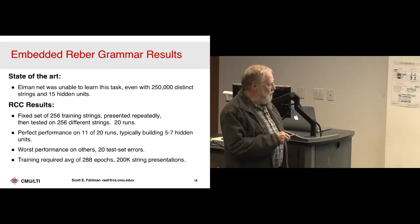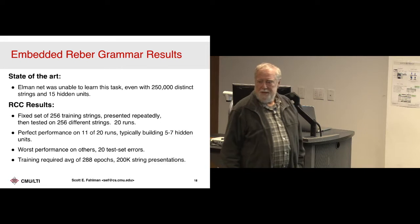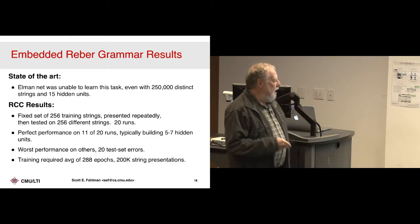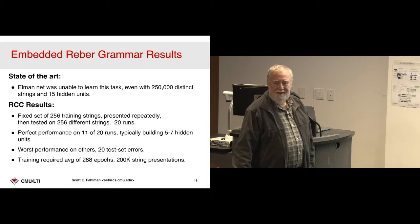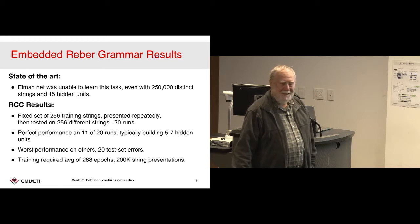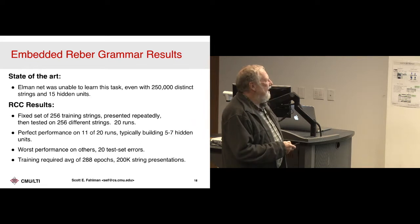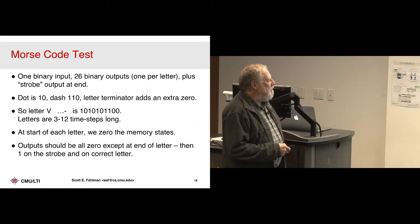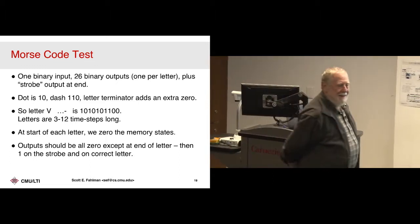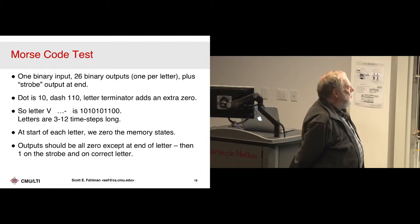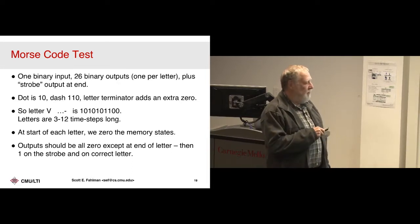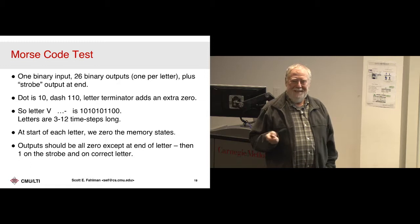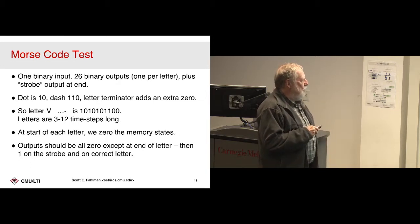Training required an average of 288 epochs with about 200,000 string presentations. That sounds like a ridiculously small training set today, but that kept me up all night, several nights in a row, right before the NIPS deadline. Then I said: can we teach it Morse code? Let's use a binary representation — we won't try to do listening to things coming in over the radio. We'll give it 1s and 0s. A dot is represented as 1, 0 and a dash as 1, 1, 0.